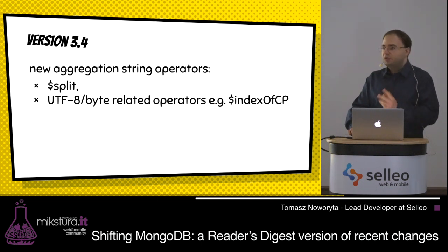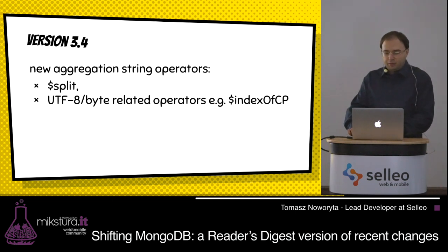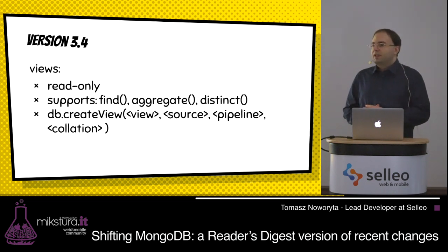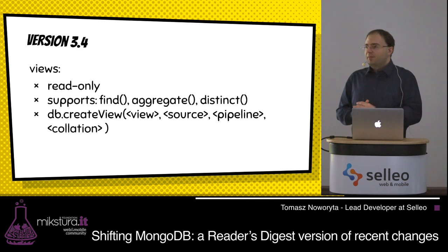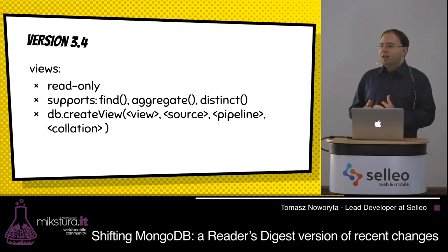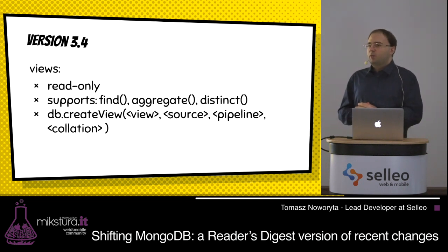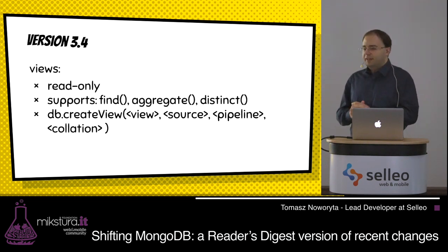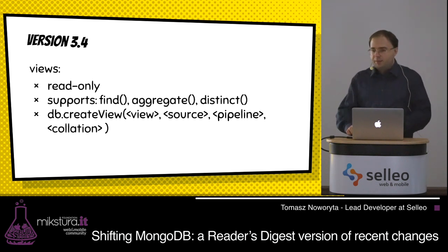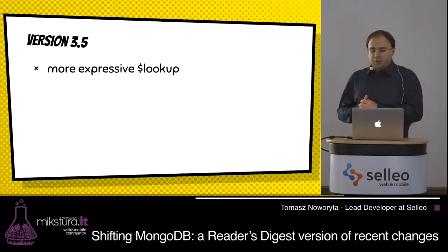In version 3.4 there are also string operators, including split which splits a string into an array, and some UTF-8 operations. Also in 3.4 we get views — something well known from relational databases. From one collection we can create a view, apply an aggregation pipeline to it, and get pre-processed read-only data. We can execute read-only commands on it such as find, aggregate, and distinct — very useful for packaging pre-processed data.